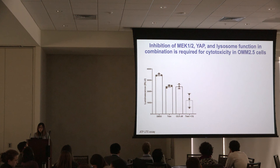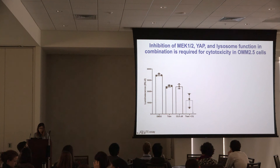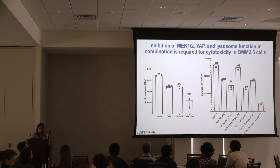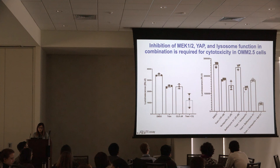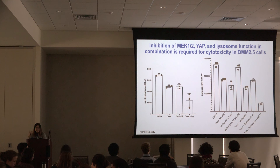We then tested whether trametinib and YAP inhibition promote cytotoxicity in GNAQ and GNA11 mutant cells, and whether autophagy is also required. Using an ATP luminescent assay as a measure of cell density, trametinib and verteporfin — a YAP inhibitor — alone showed no difference in cell density compared to verteporfin alone. However, combining trametinib, verteporfin, and bafilomycin A1 produced a striking decrease in cell density. This suggests that the pleiotropic functions of chloroquine — inhibiting YAP signaling and inhibiting autophagy — are both important and required for trametinib-induced cell death.